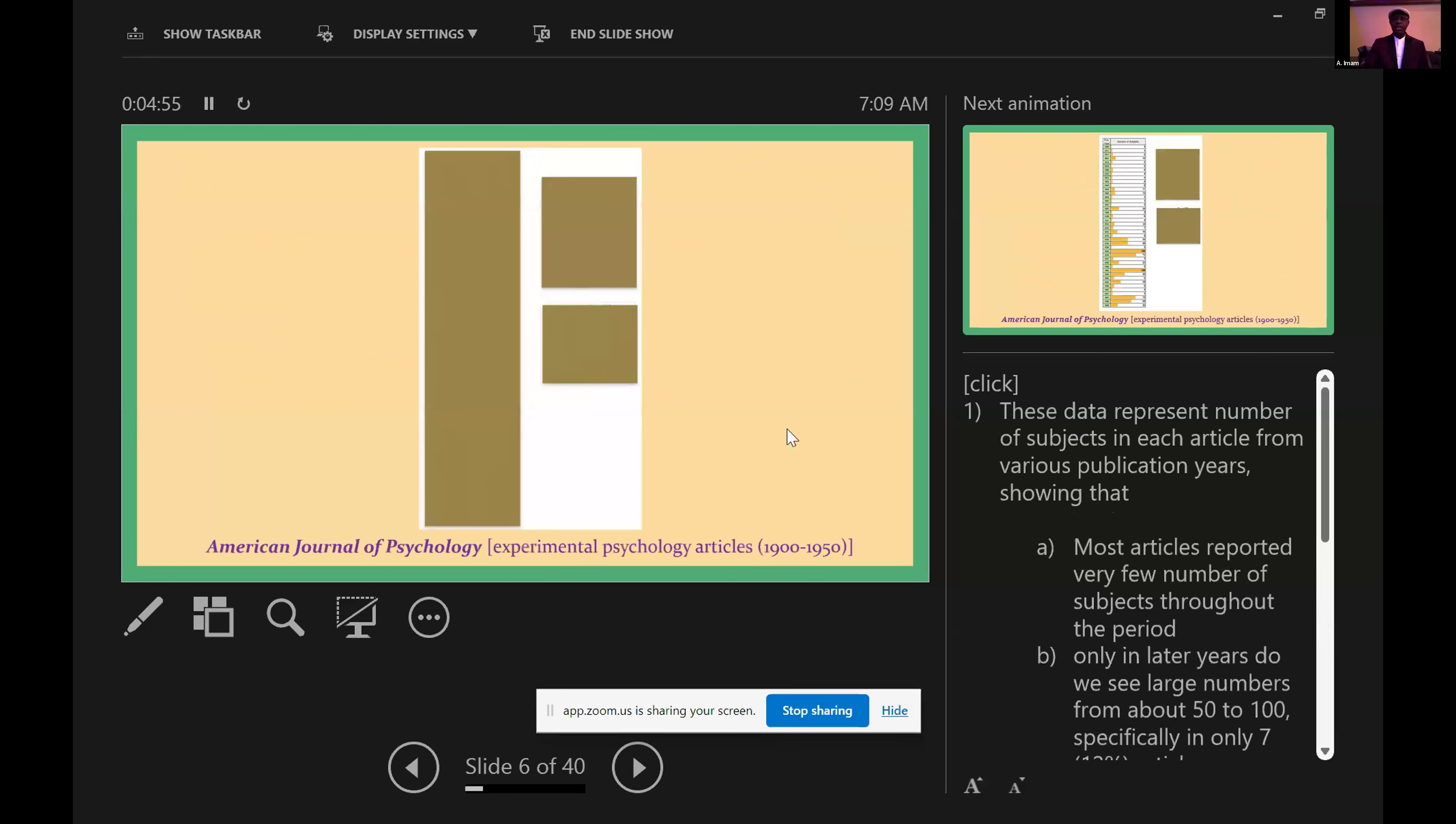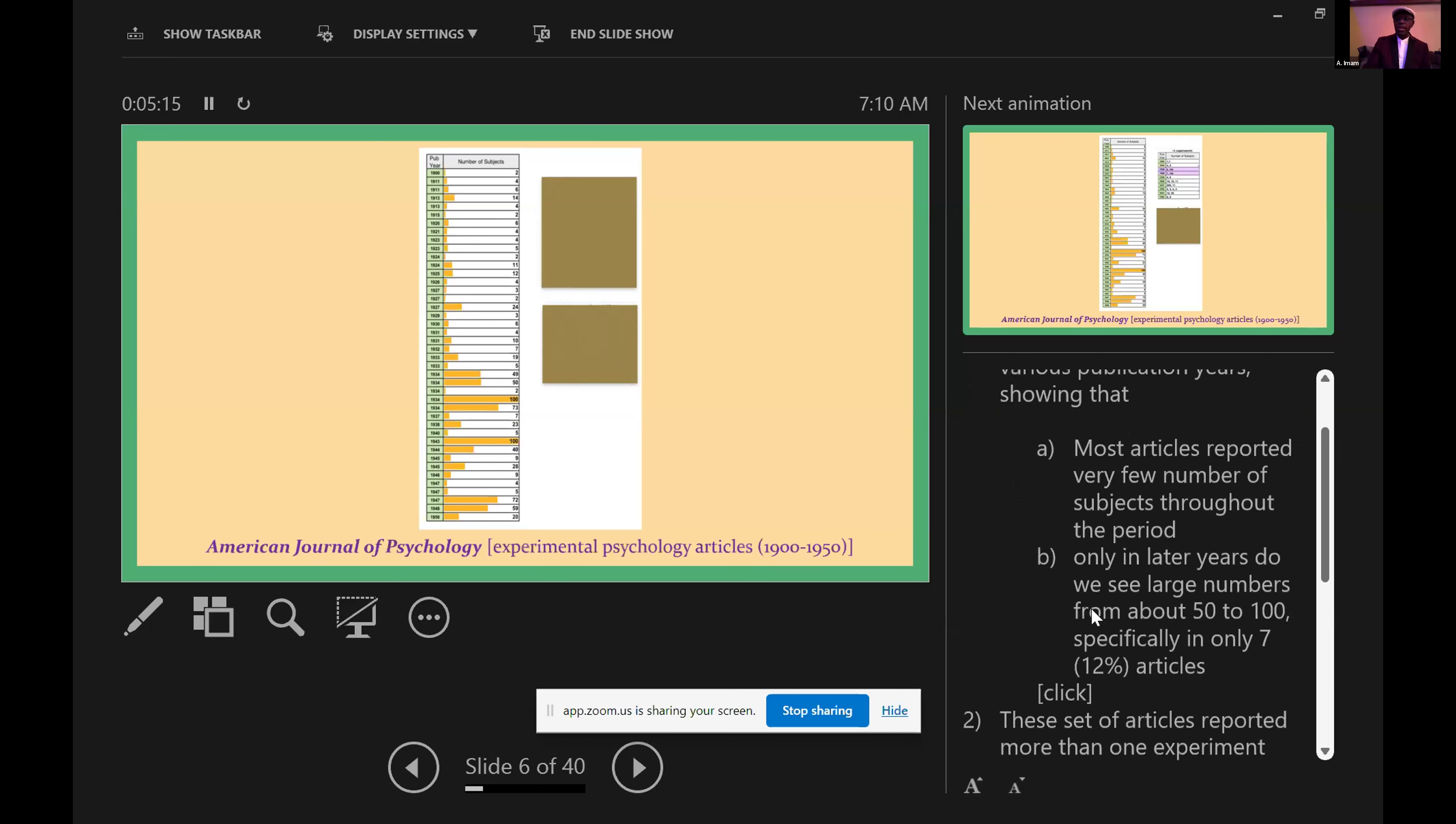So here are some data. These data represent the number of subjects in each article from various publication years and they show that most articles reported very few numbers of subjects throughout the period, and only later years do we see large numbers from about 50 to 100 subjects.